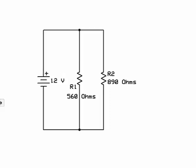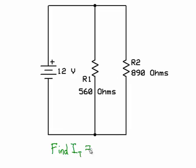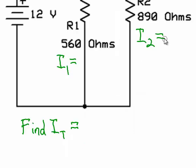In these kinds of questions you could be asked to find the total current in the circuit. You could also be asked to find the current running through branch 1, the current through branch 2, and the voltage drops across branches 1 and 2 as well.